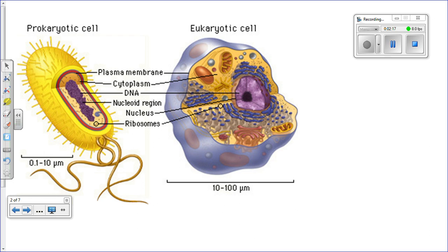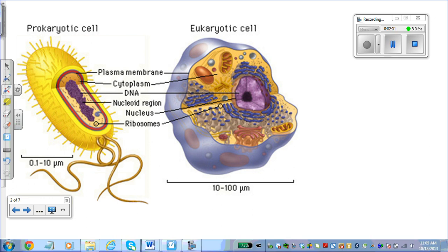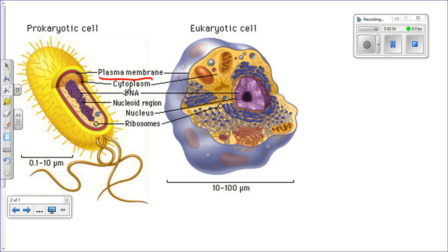Now let's talk about the differences and similarities between prokaryotes and eukaryotes. Both share a plasma membrane, cytoplasm — the watery fluid inside the cell — and they both have DNA or RNA. In prokaryotic cells, the DNA is clustered in a nucleoid region, whereas in eukaryotic cells it's housed in a nucleus. Both types also have ribosomes.